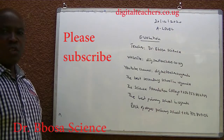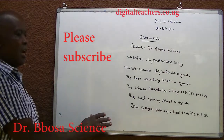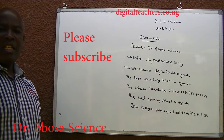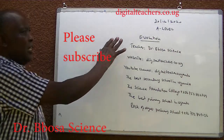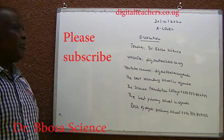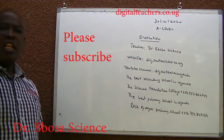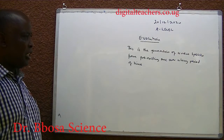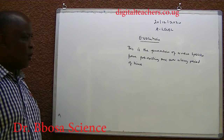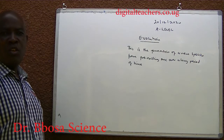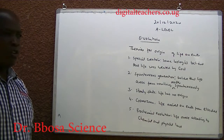The best secondary school in Uganda is the Science Foundation College. The best primary school in Uganda is Locke of Ages primary school. Today, 20th December 2020, we are going to study evolution. This is the formation of new species from pre-existing ones over a longer period of time.